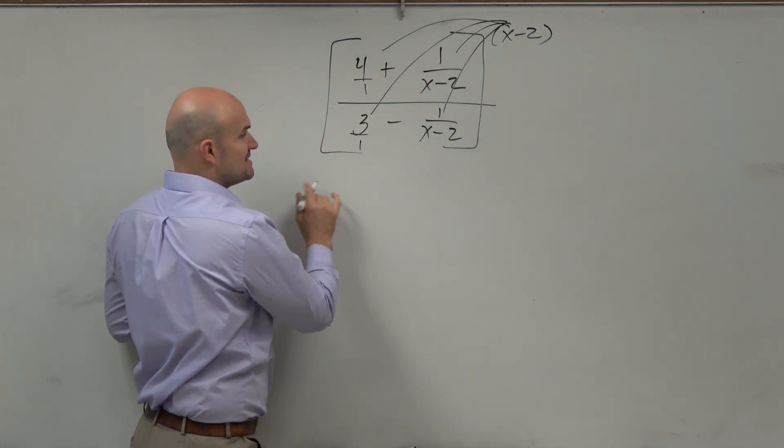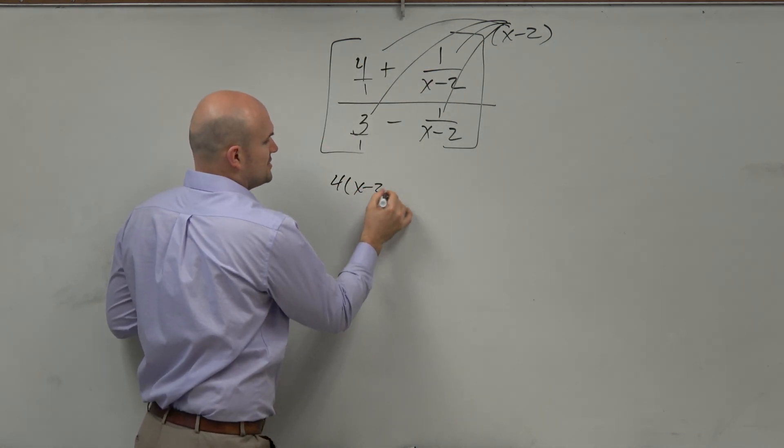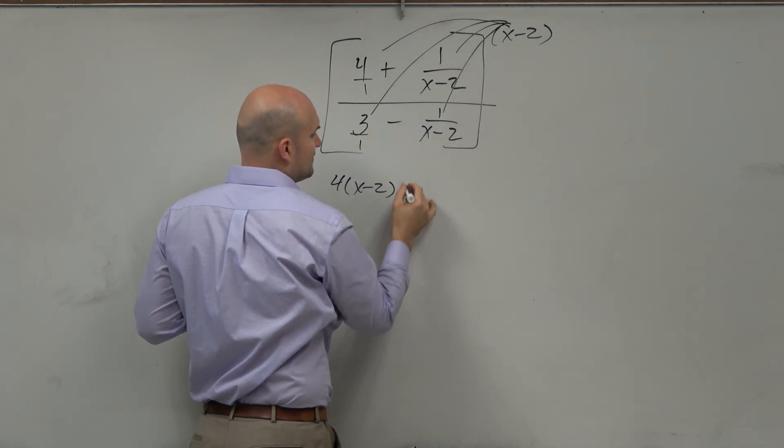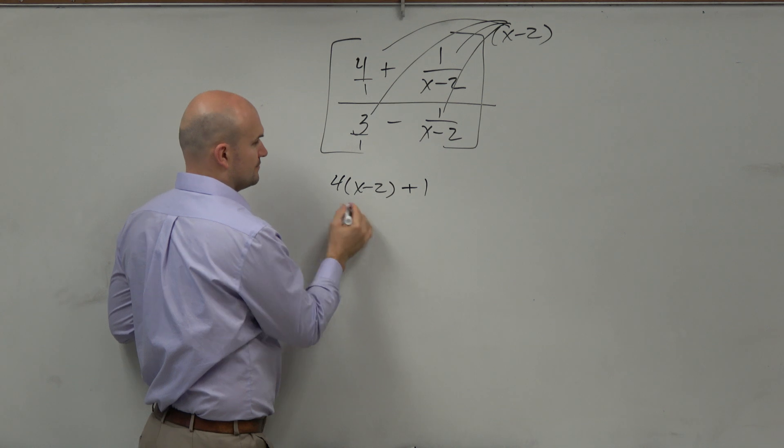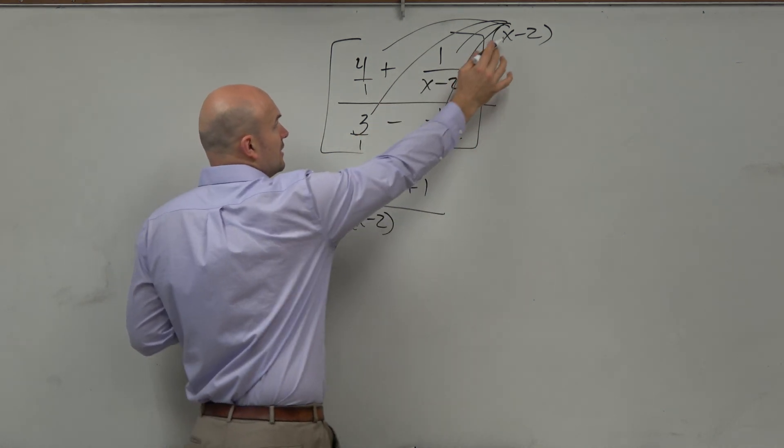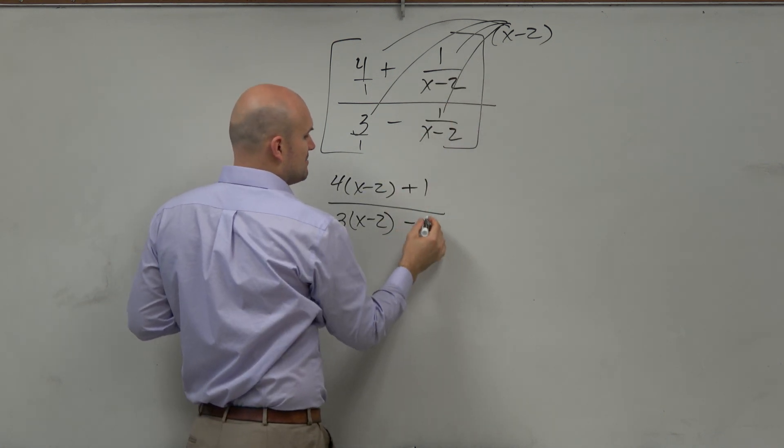So 4 times x minus 2 is 4 times x minus 2. 1 over x minus 2 times x minus 2, those would divide out. That's just going to leave me with a 1. Over here, it's going to be 3 times x minus 2. And then x minus 2 times x minus 2 is going to be a minus 1.